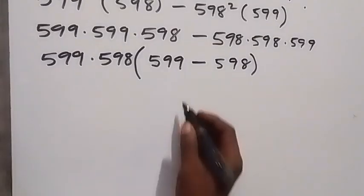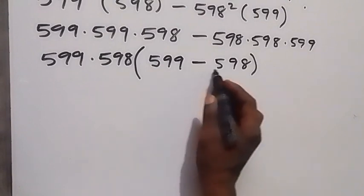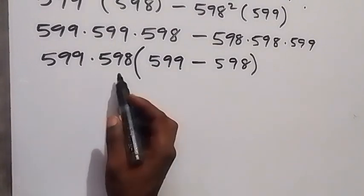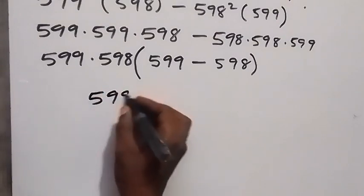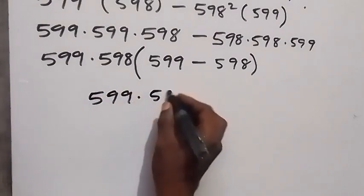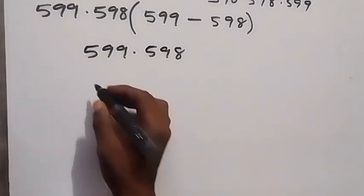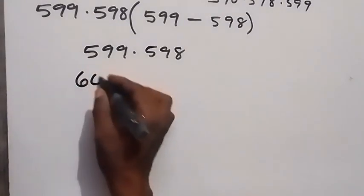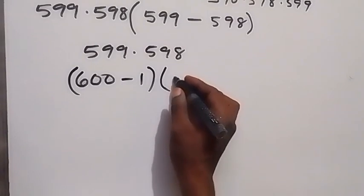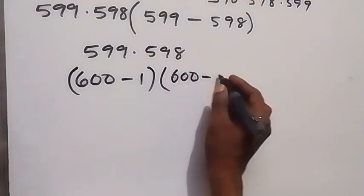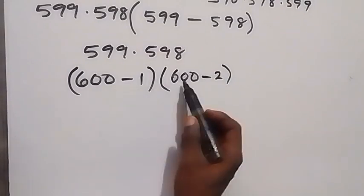When we simplify, we subtract: 5^99 minus 5^98 gives us 1, and 1 times this will still be the same thing, so we have 5^99 times 5^98. Then we can rewrite 5^99 as 600 minus 1 and also 5^98 as 600 minus 2.